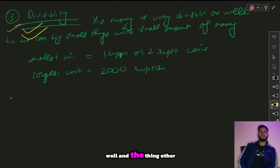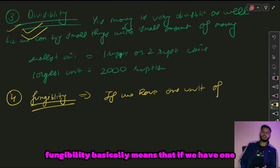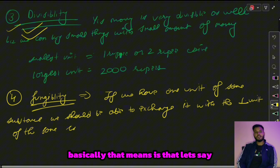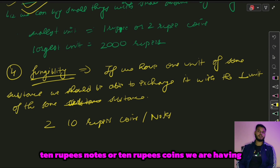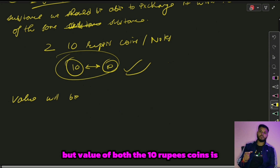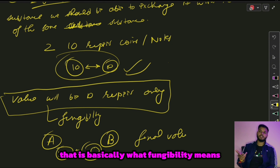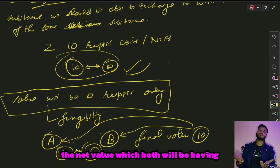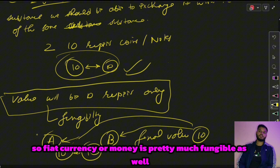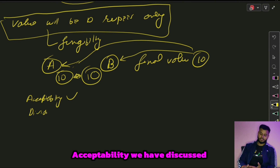Fungibility basically means that one unit of a substance should be exchangeable with another unit of the same substance. For example, if we have two ten-rupee coins or notes, even if the serial numbers differ the value of both is ten rupees. Any ten-rupee note has ten rupee value only — that is fungibility. So fiat currency is pretty much fungible as well. We've now covered acceptability, divisibility, portability, and fungibility.